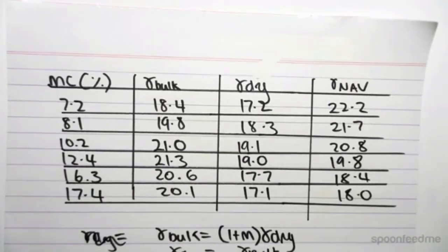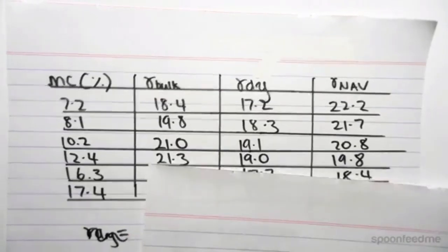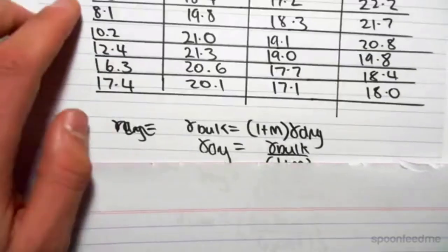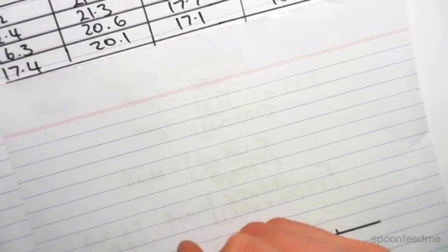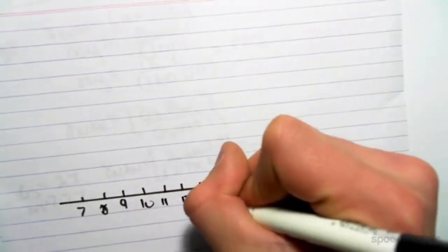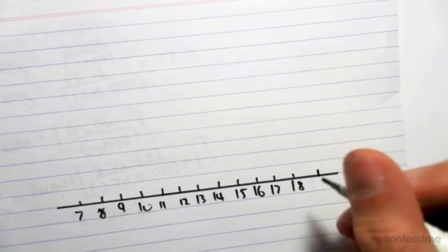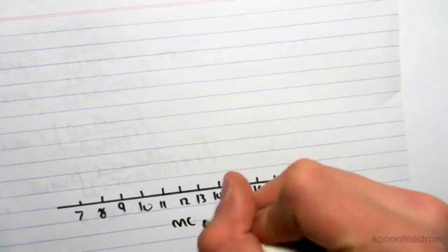It's a good idea to keep this graph to scale, just because the answer we're going to be using is going to be deduced from our graph. Moisture content ranges from 17.2 to 17.4, so let's just mark out some points. If I call this 7, 8, 9, 10, 11, 12, 13, 14, 15, 16, 17, 18, 19. This is the moisture content as a percent.